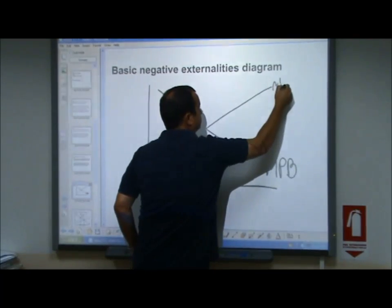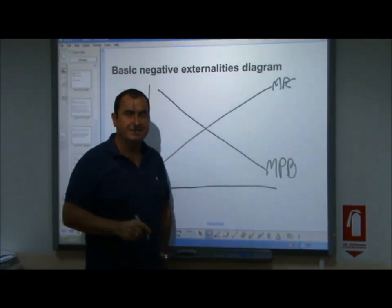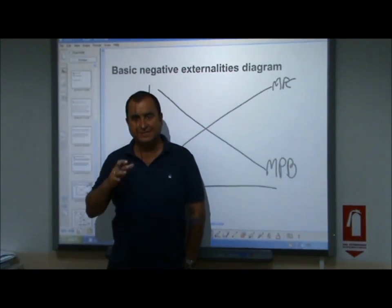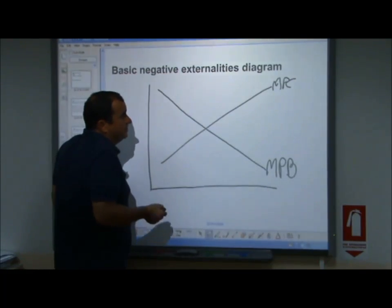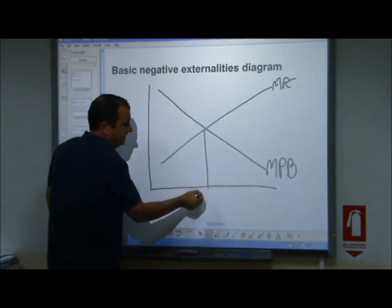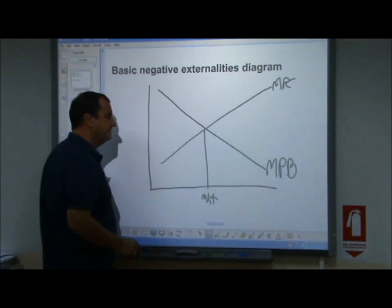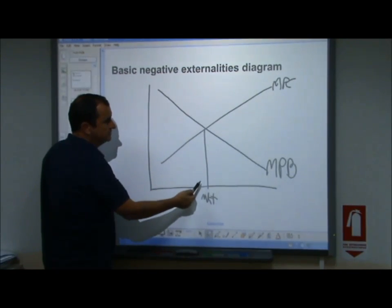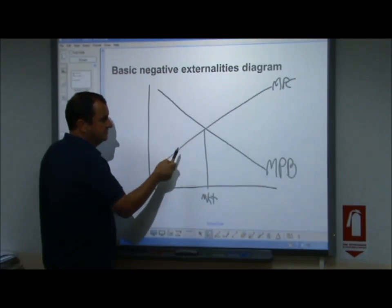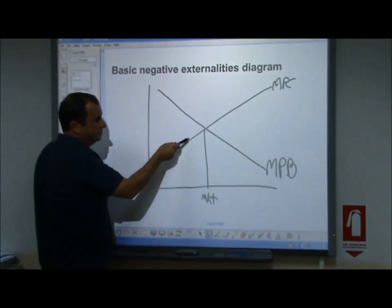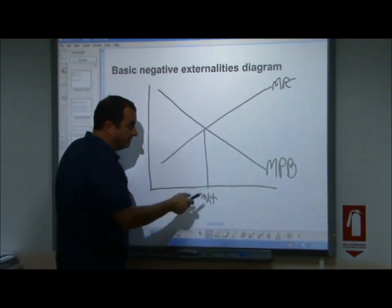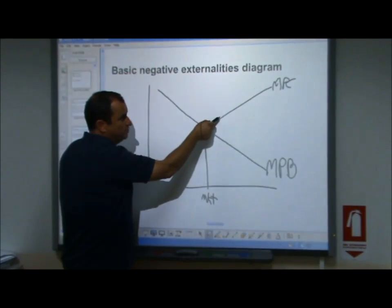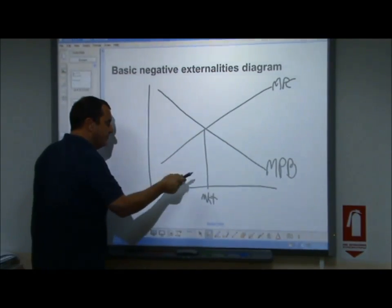There are also rising marginal private costs — the extra cost of producing another unit relates to the law of diminishing returns. For consumers and suppliers of tobacco, the market-generated level of output is where marginal private benefits and marginal private costs meet. Up to that point, it is worth producing and consuming because every unit delivers more benefit than cost. But beyond that point, nothing is gained from further production and consumption because a unit would deliver more extra cost than benefit.